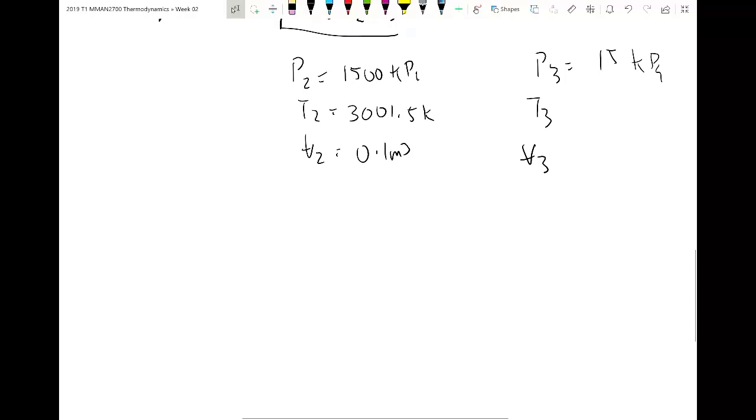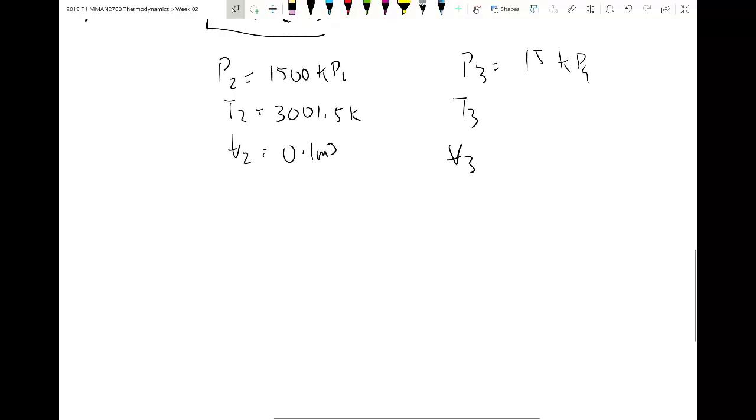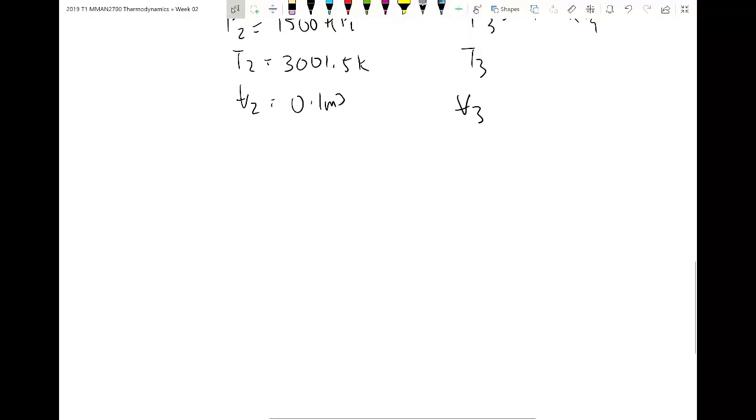So starting out with what we can calculate. We can calculate the final pressure for the third state point. Now, the equation that you can use for that is T3 on T2 equals P3 on P2 to the K minus 1 on K. Is everyone happy with that? Or do you want me to go and derive that equation? Because you might not know it off the top of your head. Yeah, I can derive that.